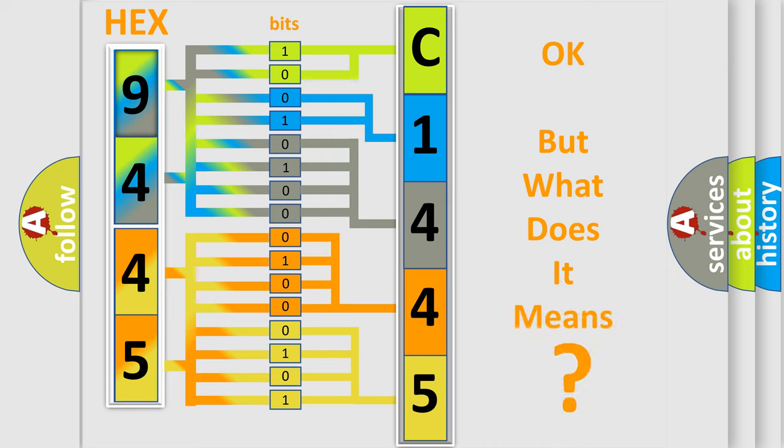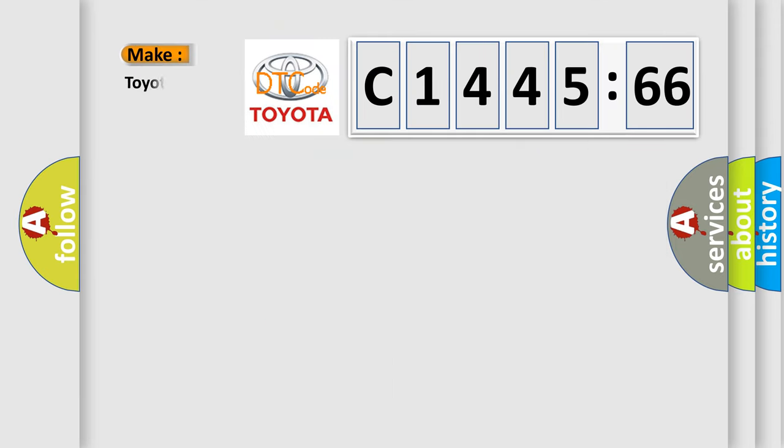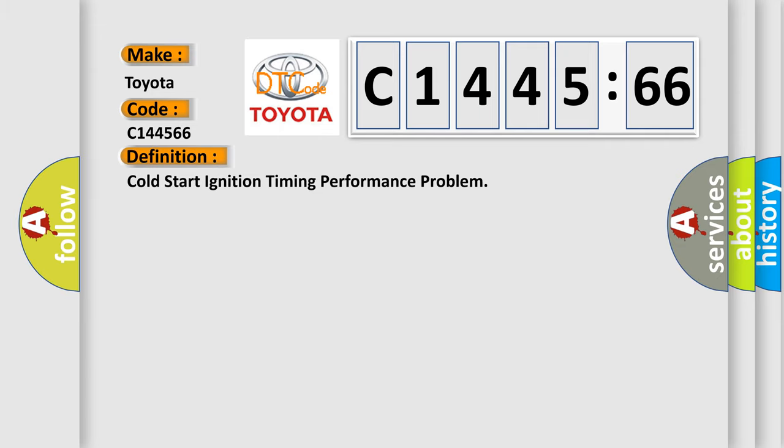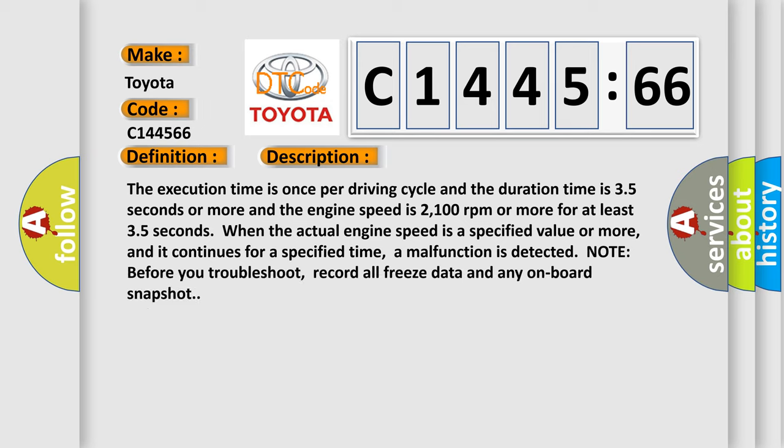We now know in what way the diagnostic tool translates the received information into a more comprehensible format. The number itself does not make sense if we cannot assign information about what it actually expresses. So, what does the diagnostic trouble code C144566 interpret specifically for Toyota car manufacturers? The basic definition is cold start ignition timing performance problem.